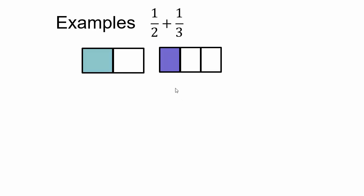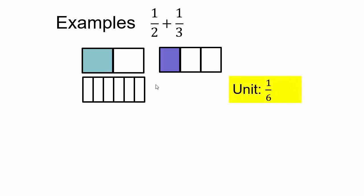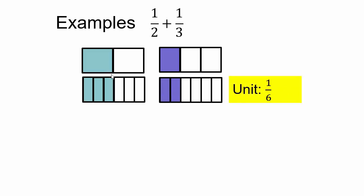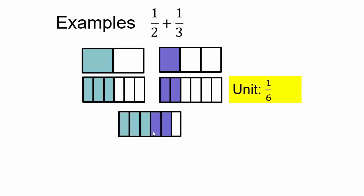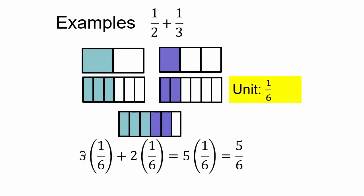Using equivalent fractions: take the 1 out of 2 pieces and break each of the 2 into 3 equal pieces, making 6 equal pieces. Take the 1-third and break it into 2, also making 6. Now I have 3 pieces out of 6 (same as 1-half) and 2 pieces out of 6 (same as 1-third). The unit is 1-sixth. Putting them together gives 5 out of 6. So 3 one-sixths plus 2 one-sixths equals 5 one-sixths, or 5-sixths.